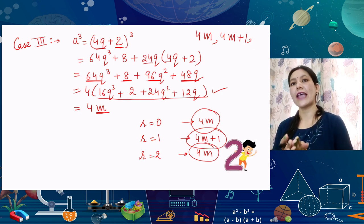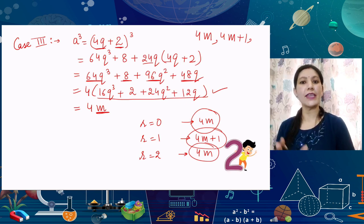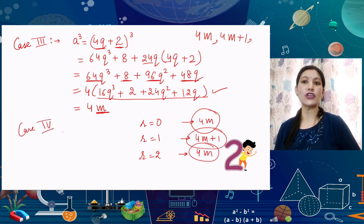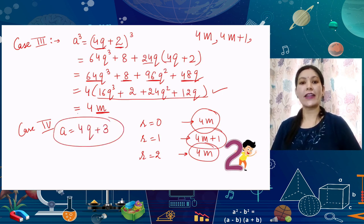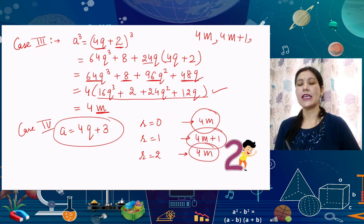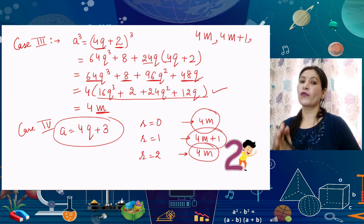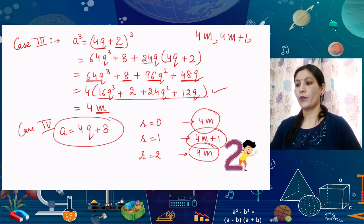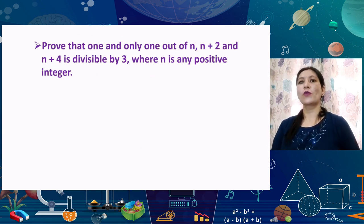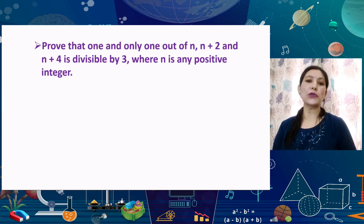So we have shown that the cube of any positive integer can be written in the form of 4m, 4m+1, or 4m+3. The next question is also based on Euclid's division lemma.